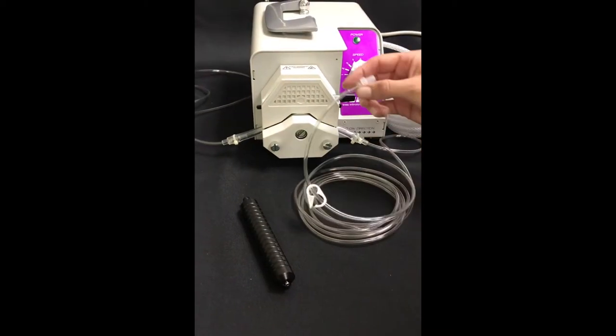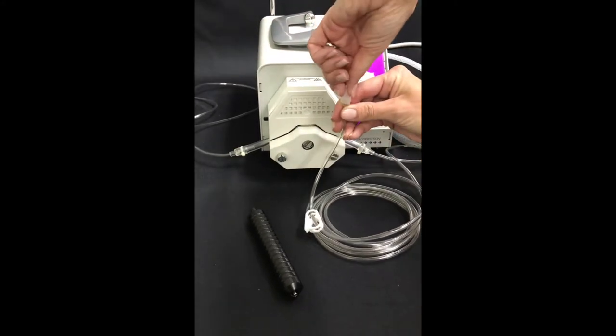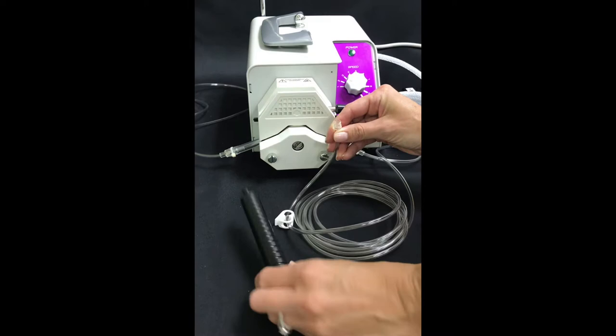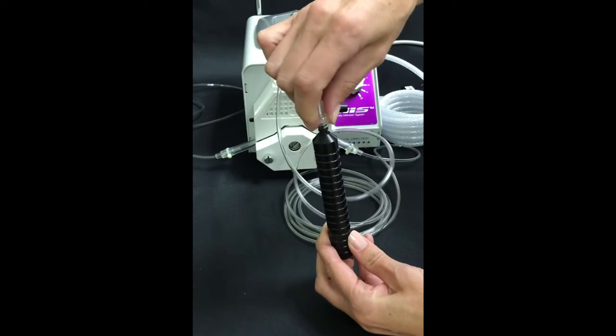Using sterile infusion tubing, the infusion handles connect to the infusion tubing with the lure lock. The infusion handle can be gassed, autoclaved, or soaked.